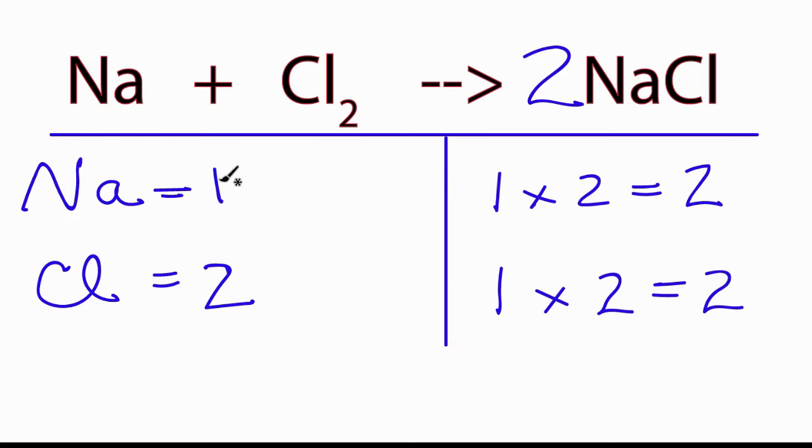Going back over to the reactants, I can see that if I have 1 times 2, that'll give me 2. So let's put a 2 as our coefficient in front of the Na. So 1 times 2 equals 2, and we still have 2 Cls.